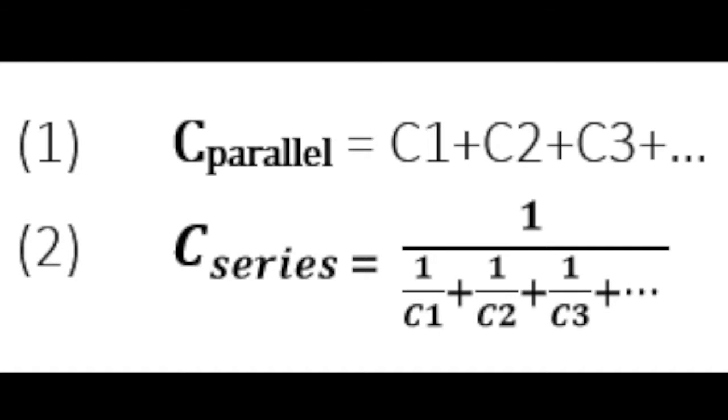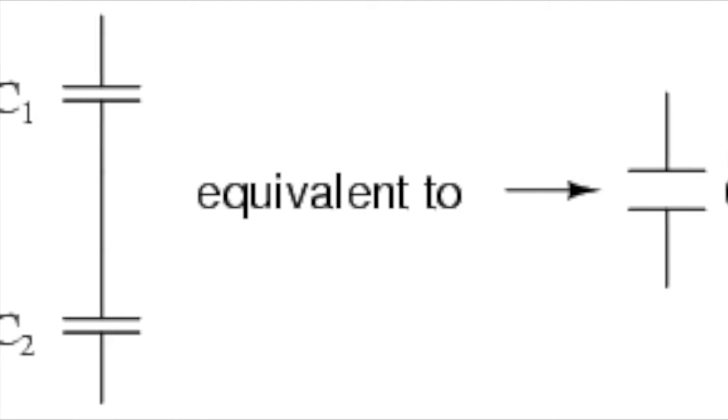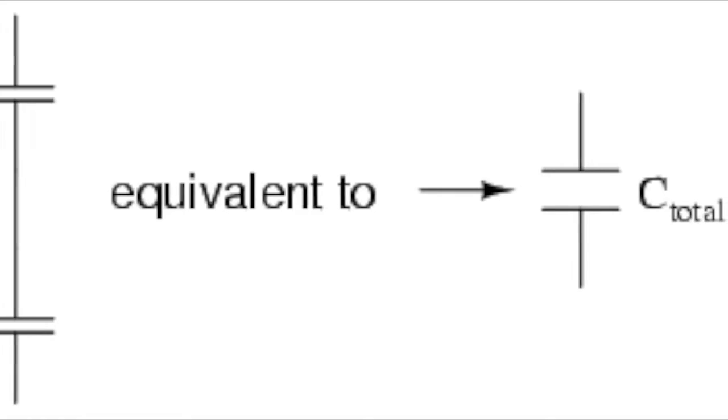In series, you have to add the reciprocals of the capacitors and take the reciprocal of that. A series is equivalent to increasing the distance between the two conductive plates, which means decreasing electrical storage.